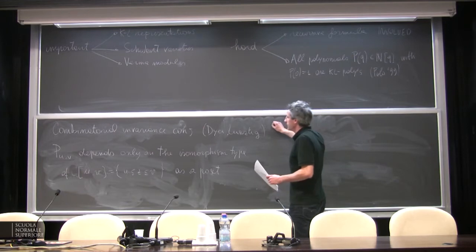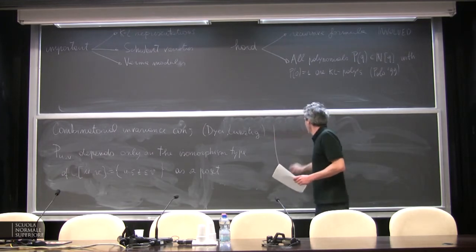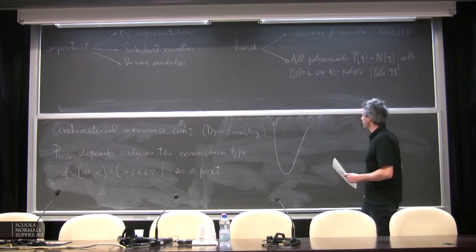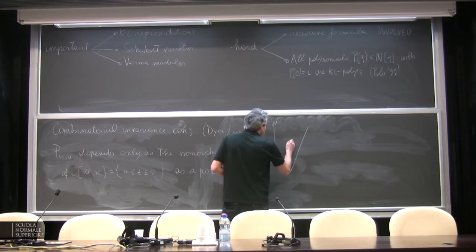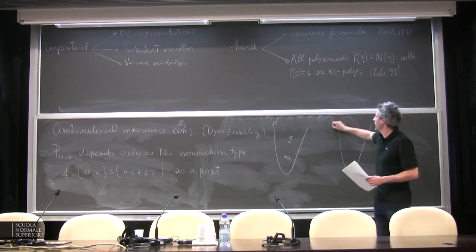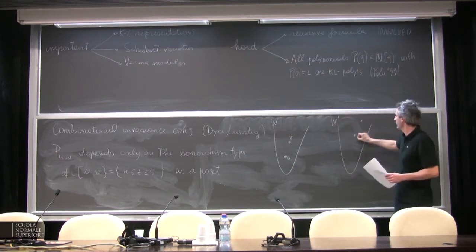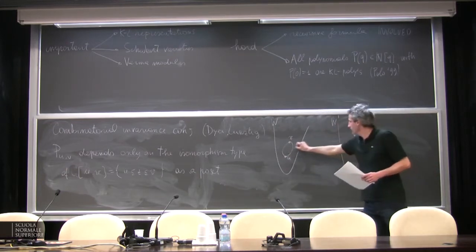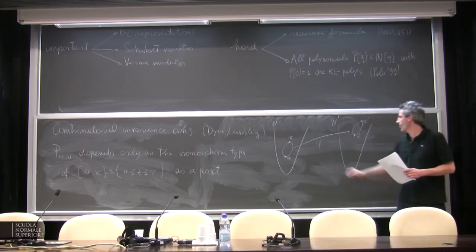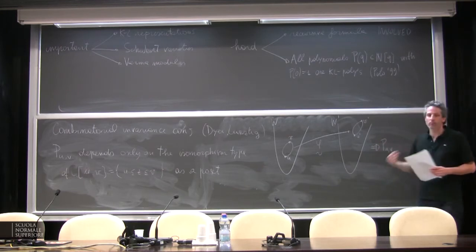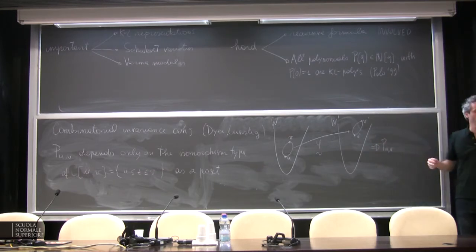Let me state this in a different way. You have one Coxeter group and an interval [u, v]. You have another Coxeter group and another interval [u', v']. Suppose that these two intervals are isomorphic as posets. Then the two Kazhdan–Lusztig polynomials in different Coxeter groups are the same.